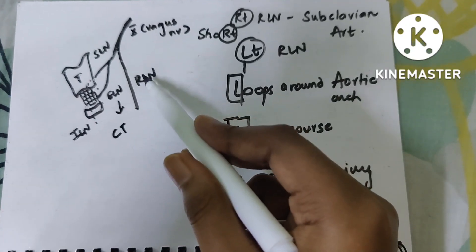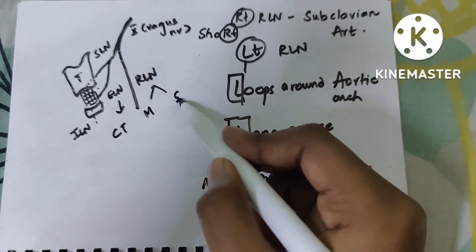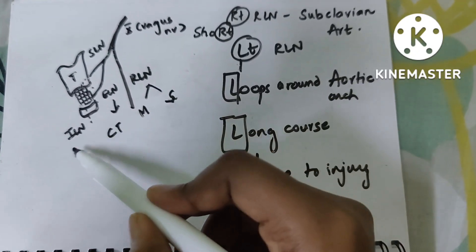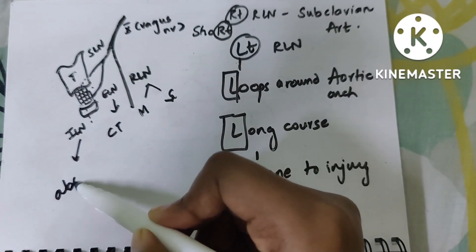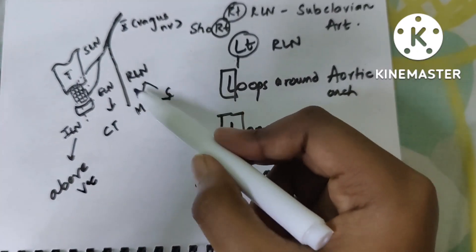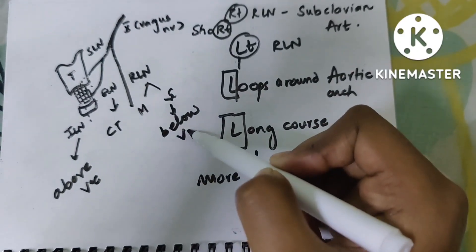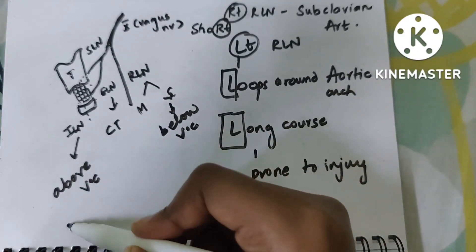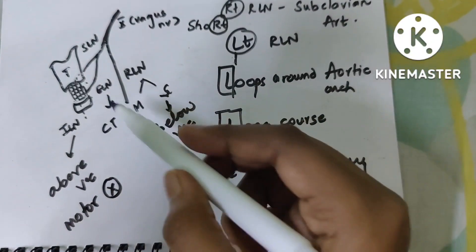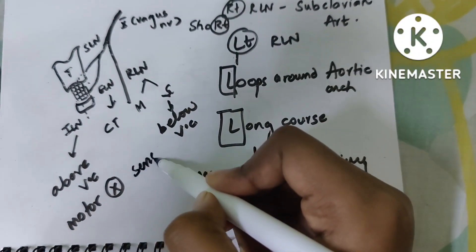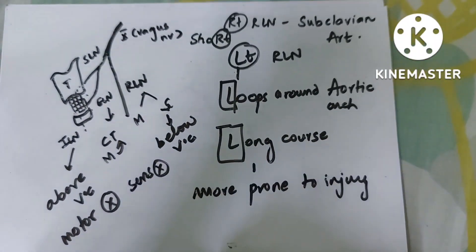The recurrent laryngeal nerve has both motor and sensory supplies. The internal laryngeal nerve provides sensory supply above the vocal cord, whereas the recurrent laryngeal nerve provides sensory supply below the vocal cord. The internal laryngeal nerve has no motor supply, whereas the external laryngeal nerve has no sensory supply — it supplies only the cricothyroid muscle.